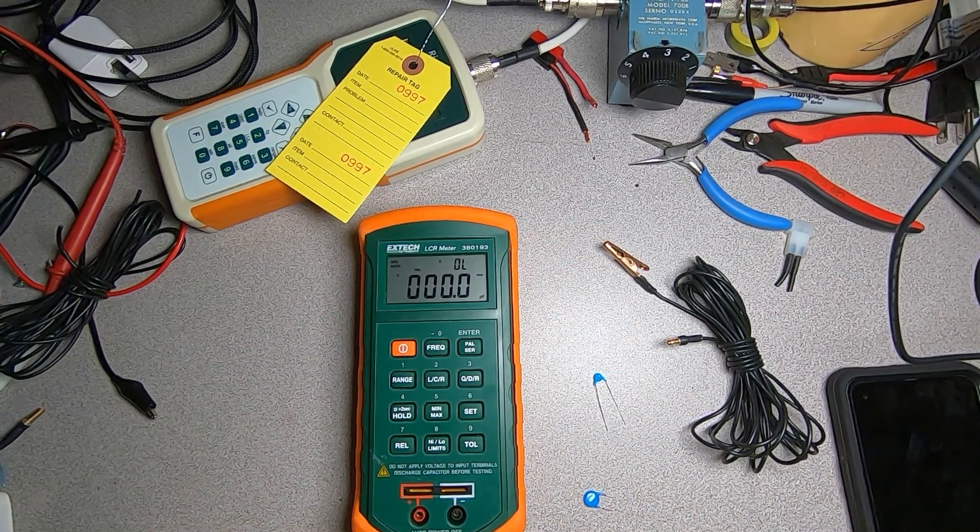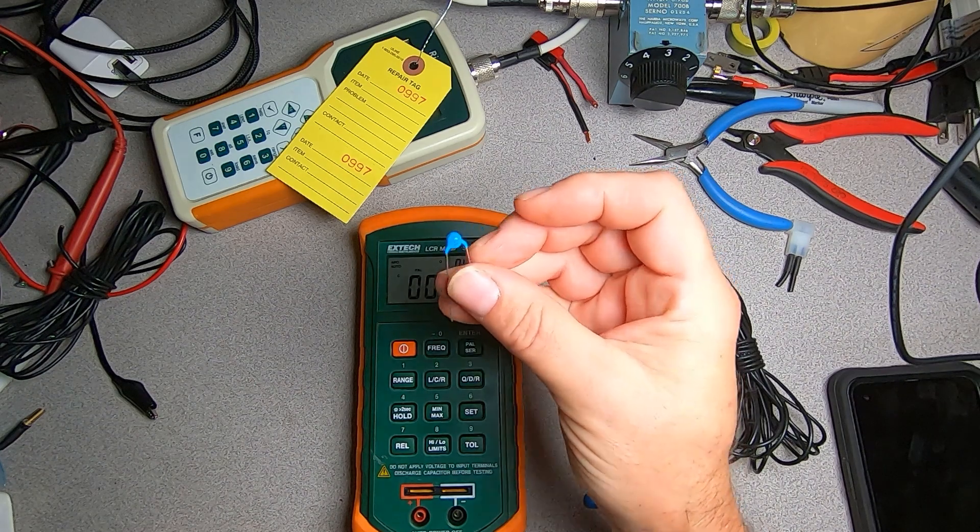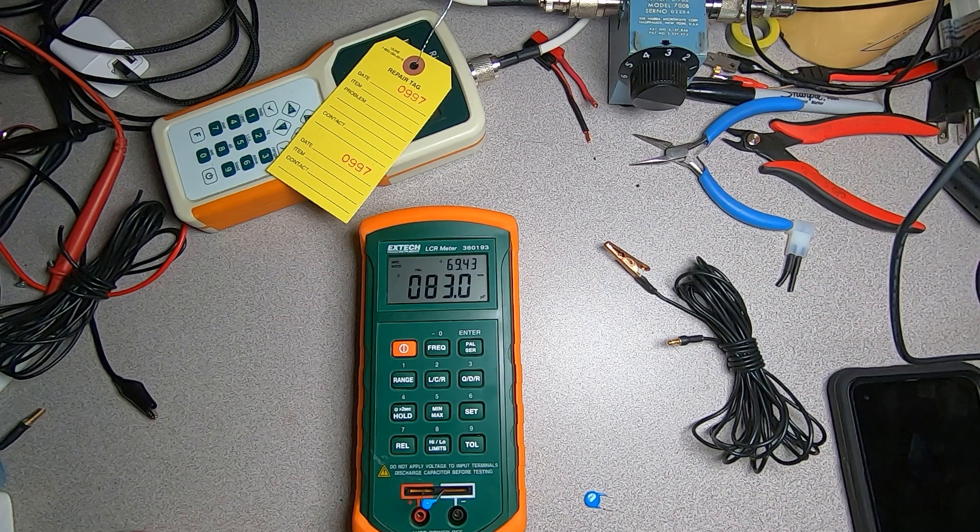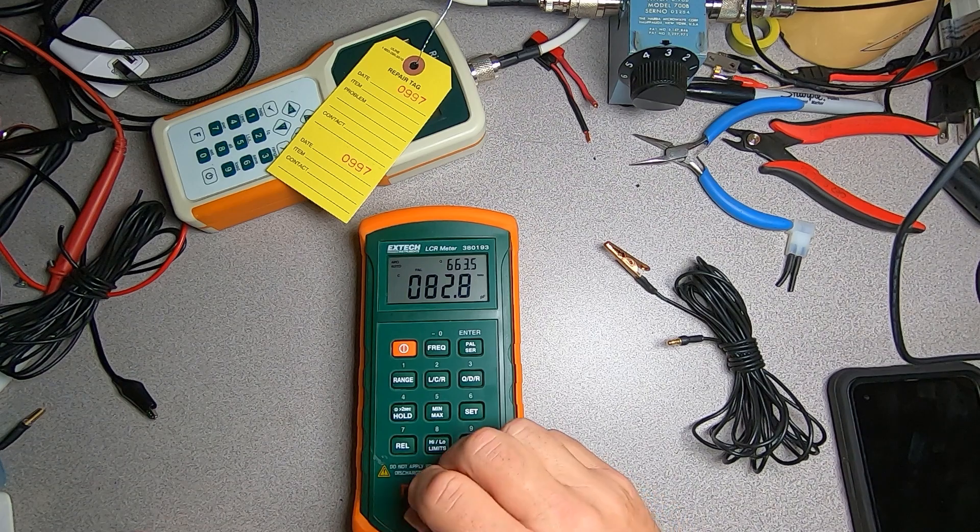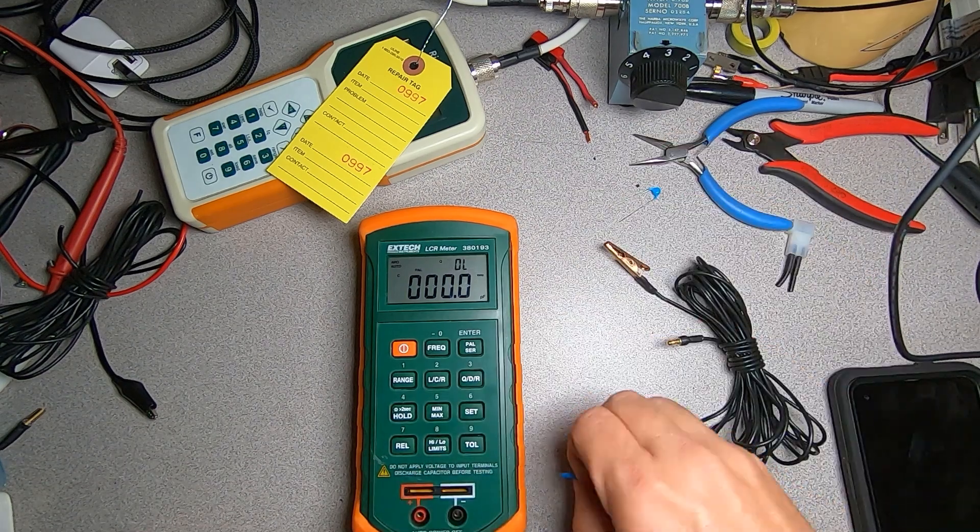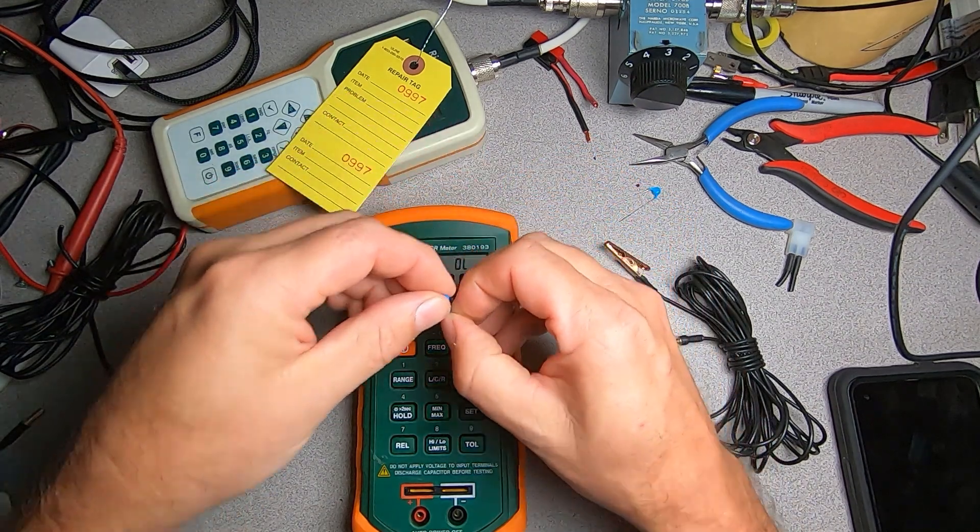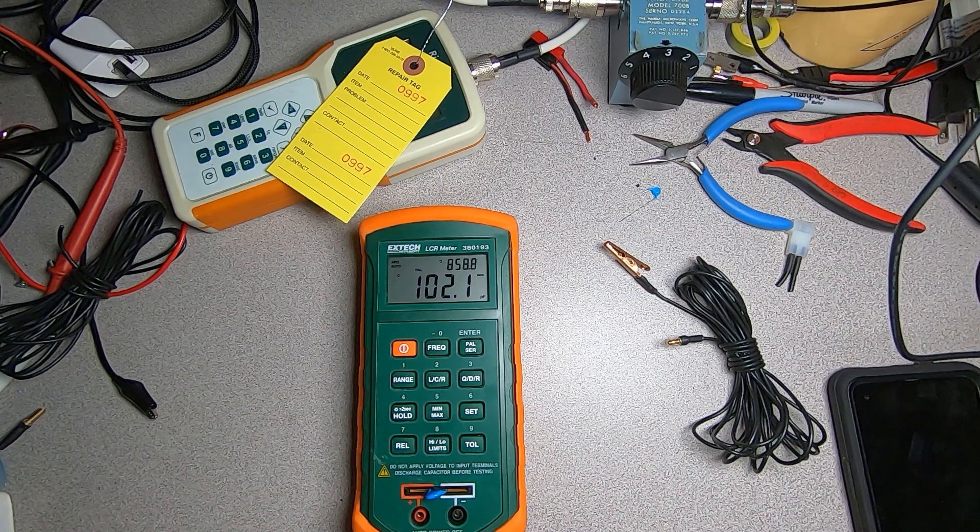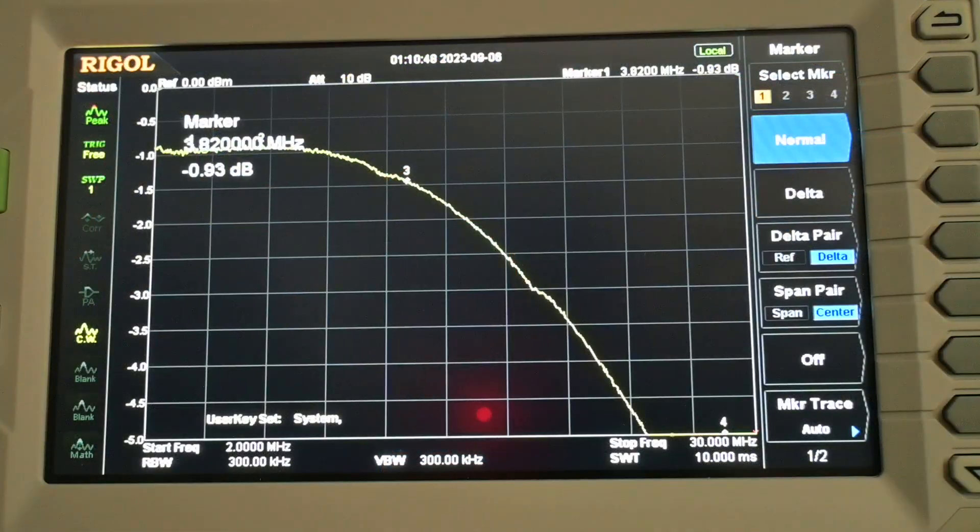Let's check the capacitance of our capacitors. This is our eBay 10 kilovolt 100 picofarad, and we're looking at around 83 picofarads as the value. This is our 120 picofarad TDK capacitor, and we can see that it is 102.1 picofarads.